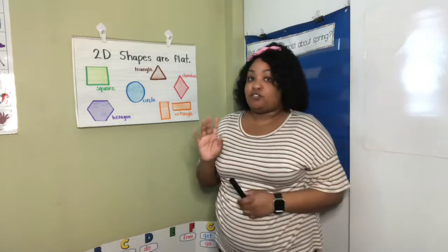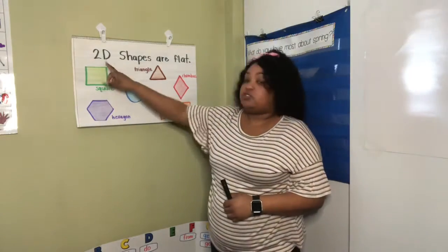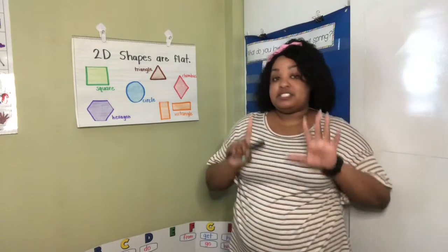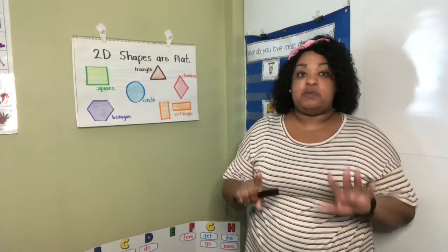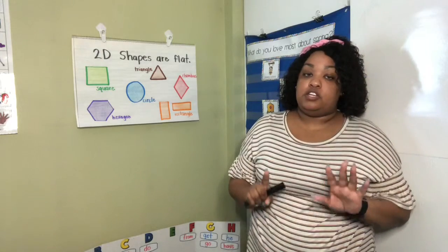We've talked a lot about 2D shapes. 2D shapes are flat. There are six shapes that we spent a lot of time talking about.